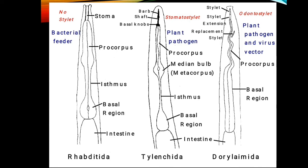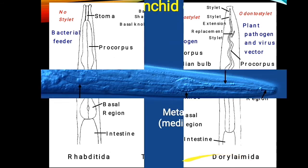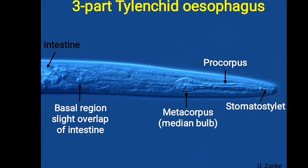In the case of Xiphinema, there is a lumen along with an odontostellate and odontophore. To summarize stylet types: rhabditids have no stylet, tylenchids have a stomatostellate, and dorylaimids have an odontostellate.